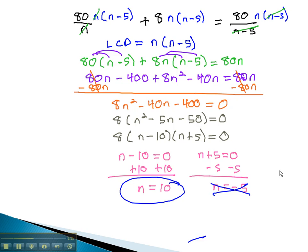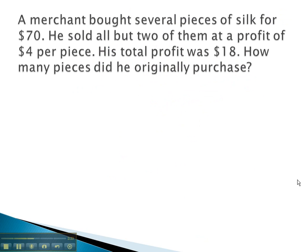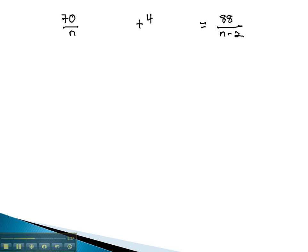The second problem we set up, we had a merchant buying pieces of silk and selling them at a profit. We ended up with this equation, which we can now solve by identifying the least common denominator, being n times n minus 2, and multiply each term by n, n minus 2, including the 4.